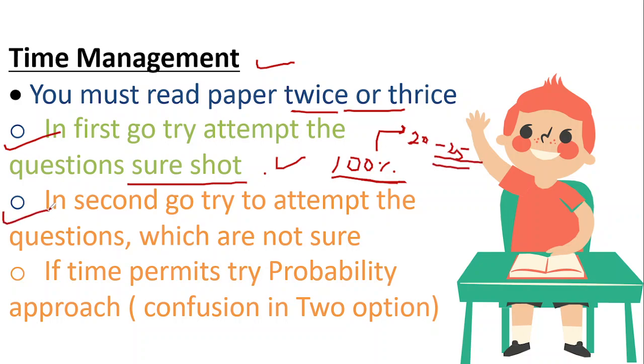Now in second go, try to attempt the questions which you are not sure about, but you have 50-50 or 50 to 80% knowledge. By elimination, you can do it. And if time permits, try probability approach. Probability approach means that sometimes there are four options, you are able to eliminate two options, but there are two options left.